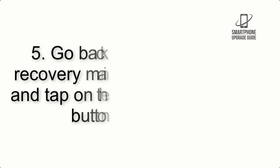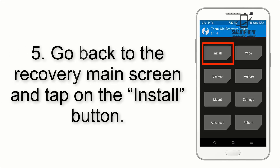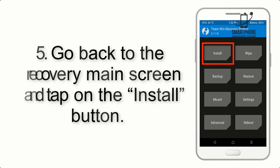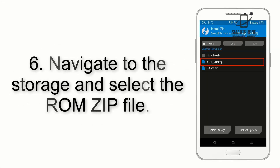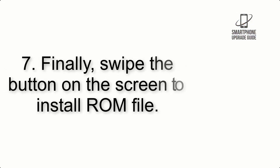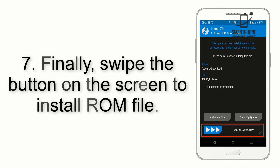Step 4: Swipe the button to wipe the device. Step 5: Go back to the recovery main screen and tap on the Install button. Step 6: Navigate to the storage and select the ROM zip file. Step 7: Finally, swipe the button on the screen to install the ROM file.